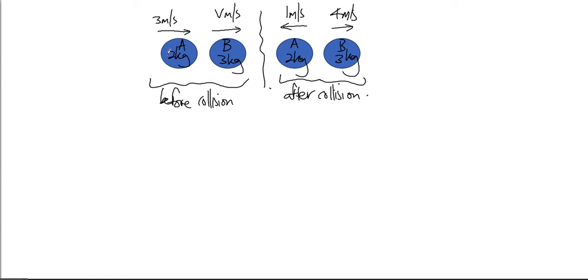When A travels at 3 meters per second and collides with B which is traveling at a certain speed, after the collision we see that A is moving in a different direction. Initially it was moving towards the right, after the collision it's moving towards the left.